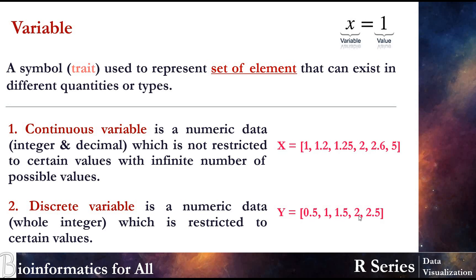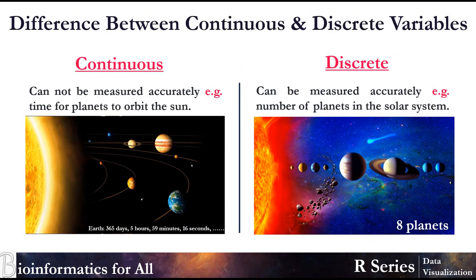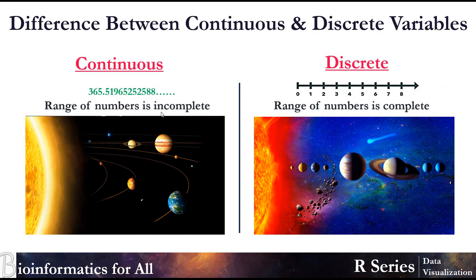So what's the difference between continuous and discrete variables? The main difference is that continuous variable cannot be measured accurately. For example, time for any planet to orbit the Sun - in Earth's case it's 365 days, 5 hours, 59 minutes, 16 seconds, and it goes on to picoseconds and on and on. But in discrete variables, it can be measured accurately. For example, the number of planets in the solar system - we have 8 planets. We can't say we have 8.5. So the range of numbers is incomplete in the case of continuous variables and is complete in discrete variables.